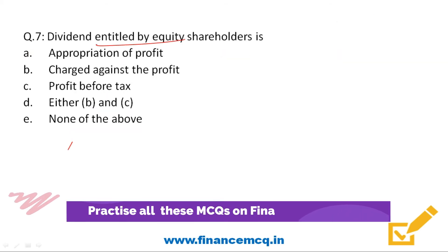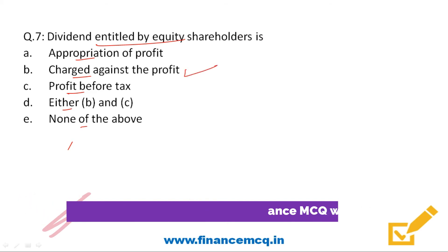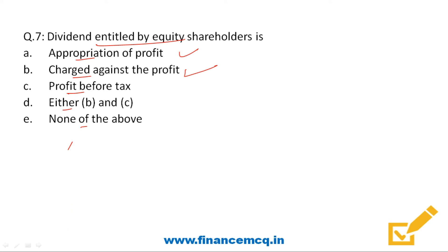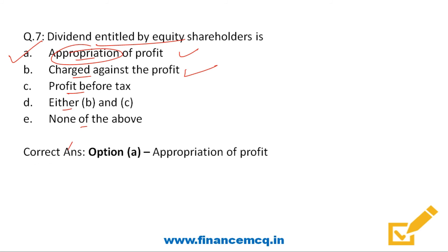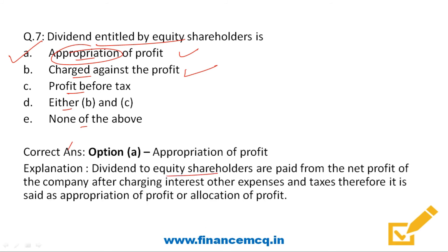Next question: dividend entitled by equity shareholders is — an appropriation of profit, charged against profit, profit before tax, or either B and C? First, the difference: charge against profit is an expense that must be paid whether the firm earns profit or incurs losses. Appropriation of profit, on the other hand, is allowed only if the firm earns profit. So the correct answer is option A: appropriation of profit. Dividend to equity shareholders is paid from net profit after charging interest, other expenses, and taxes, and is therefore an appropriation of profit.